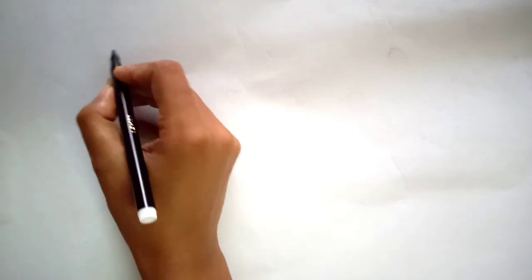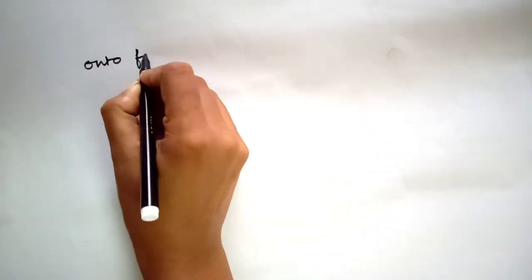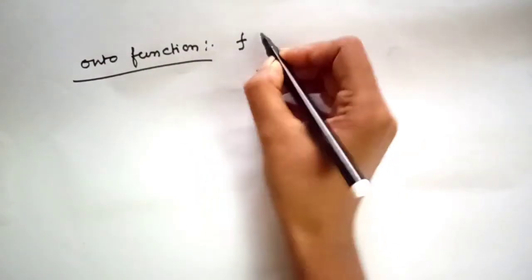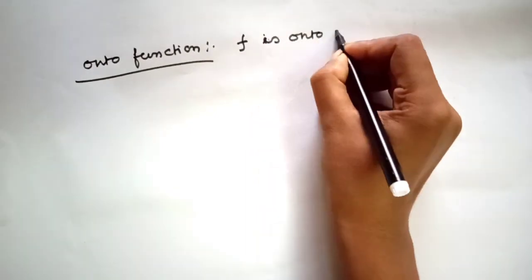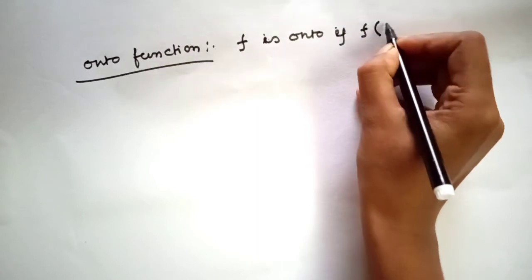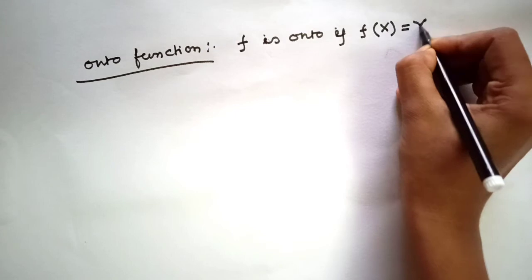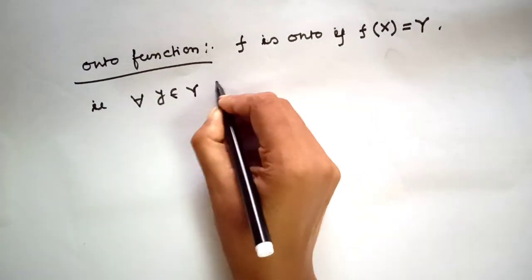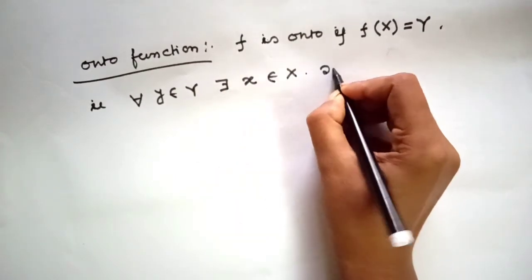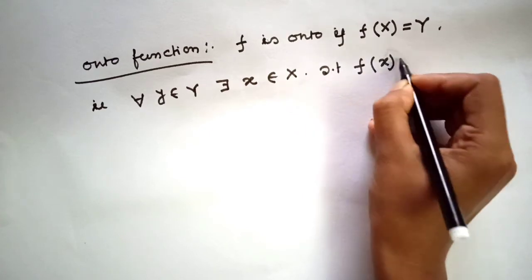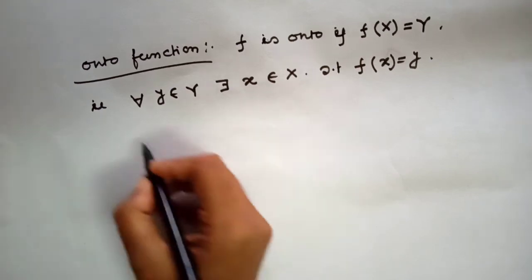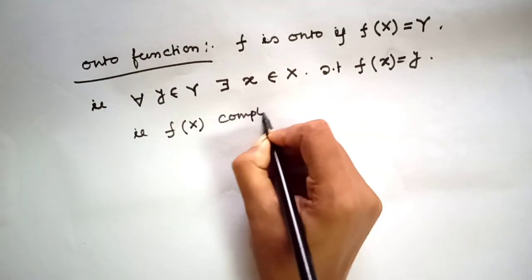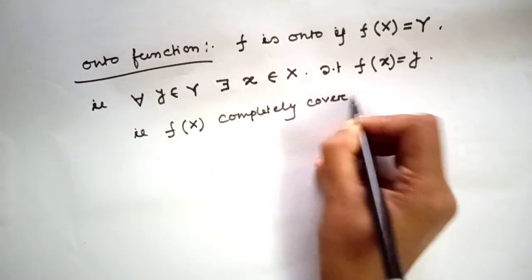The next definition is onto function. F is onto if f(X) = Y. That means for all y belonging to Y, there exists x belonging to X such that f(x) = y. In other words, the image of f completely covers the codomain set Y.